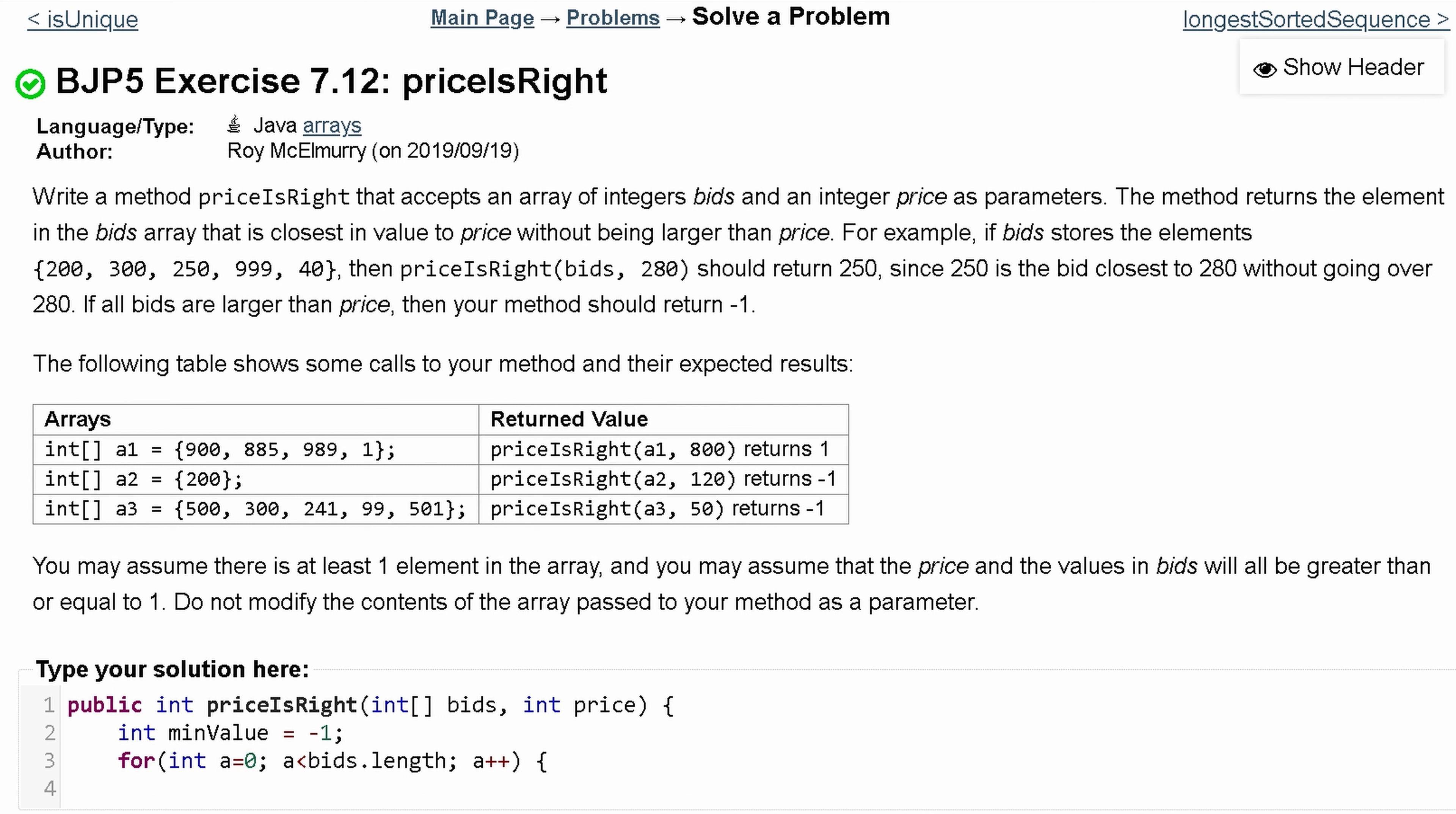Inside of the for loop is where we're going to have our check. The first is we want to make sure this value is less than the one we're passing here, right? So the current value we're looking at, this element has to be less than or equal to our price. And we have to have the second condition.